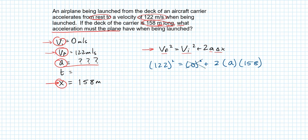First off, that zero's gone. We're going to square 122, and then we're going to multiply 158 by two. All right, so here we have 14,884 is equal to, when you multiply two times 158, you get 316 times the acceleration.